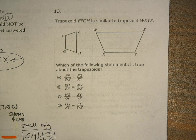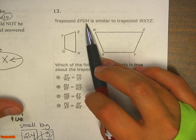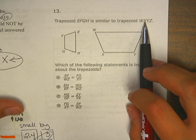Okay, number 13 on the review. Trapezoid EFGH is similar to trapezoid WXYZ.